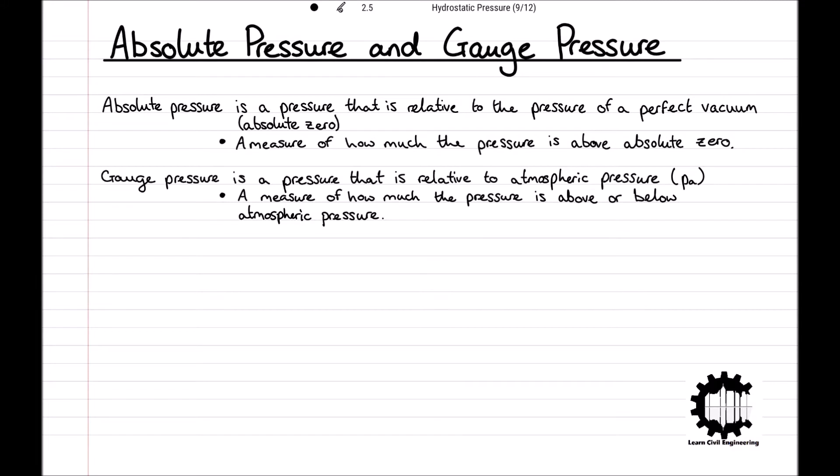Absolute pressure and gauge pressure are related by absolute pressure equals gauge pressure plus atmospheric pressure, where absolute pressure must be greater than or equal to zero, and gauge pressure must be greater than or equal to minus Pa.